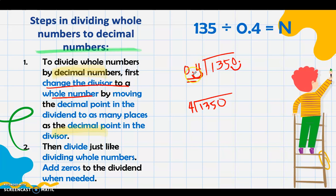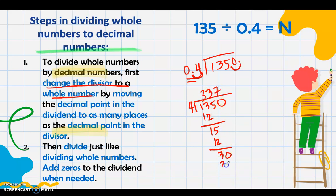If there are two digits after the decimal point in the divisor, you need to move two places in both the divisor and dividend. Now let's divide: 13 divided by 4 is 3, that's 12, remainder 1. Bring down 5: 15 divided by 4 is 3, that's 12, bring down 0: 30 divided by 4 is 7, that's 28, remainder 2. Add decimal point and 0, put the decimal point on top, bring down the 0, continue dividing: 20 divided by 4 is 5. The answer is 337.5.